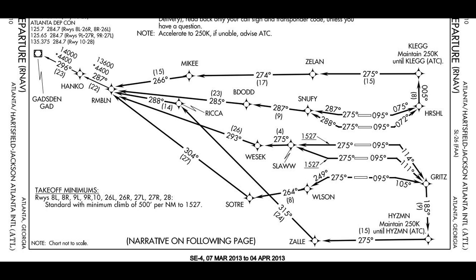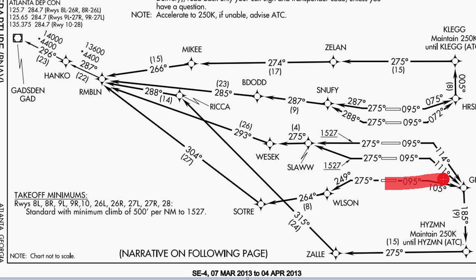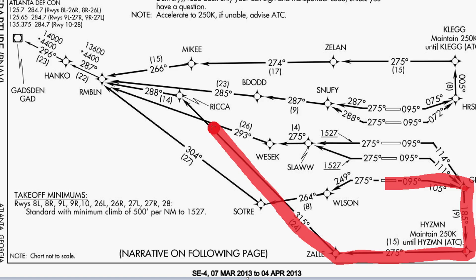Here's an RNAV SID for Atlanta, and you basically see the same thing. Depart your runway — in this case on the bottom runway at a heading of 9-5 — and you essentially use your LNAV and VNAV on your FMS to follow the path.